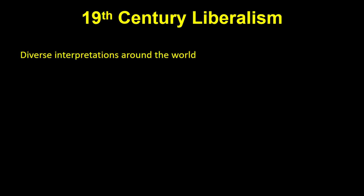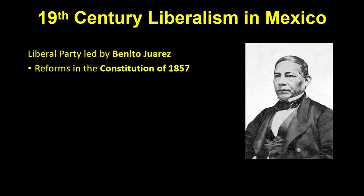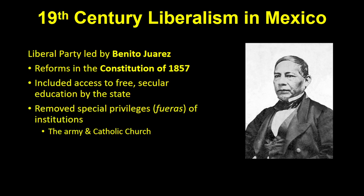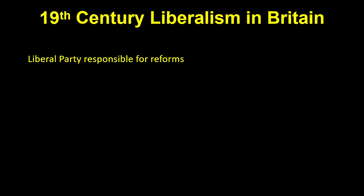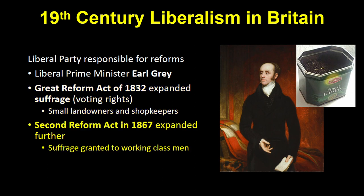19th century liberals differed around the world but shared a concern for individual rights. They preferred limited, secular government, and supported freedom of speech, freedom of the press, freedom of trade, and expanded political representation. In Mexico, the Liberal Party led by Benito Juárez enacted reforms in the Constitution of 1857, including free secular education and removal of special privileges for the army and Catholic Church. In Britain, the Liberal Party passed the Great Reform Act of 1832 under Prime Minister Earl Grey, expanding suffrage to a larger percentage of male citizens, and the Second Reform Act of 1867 expanded it further.